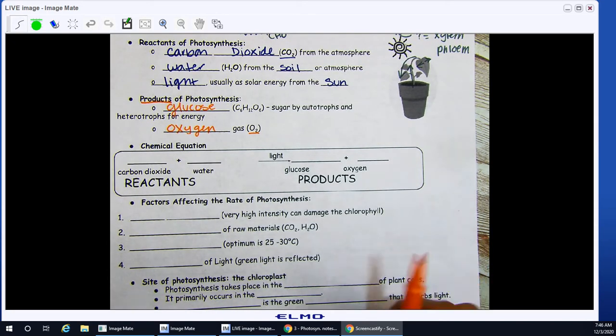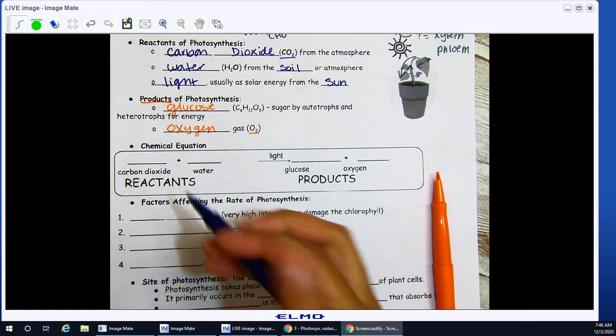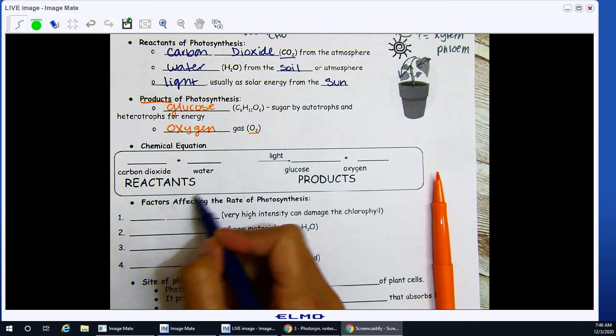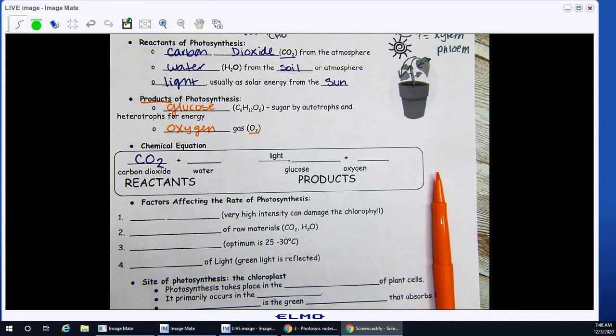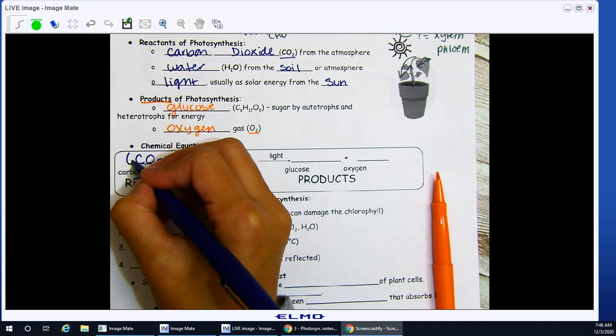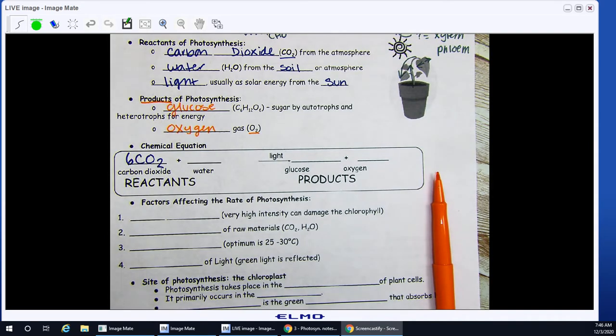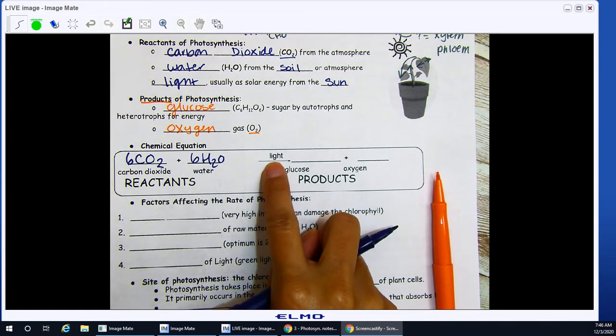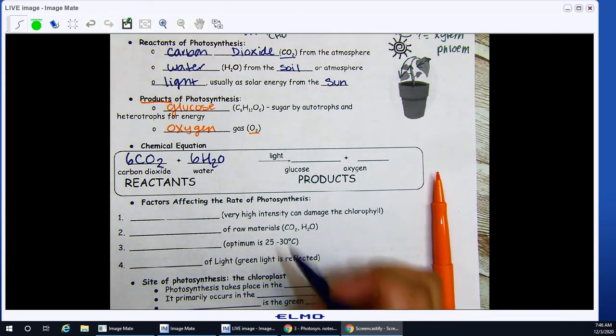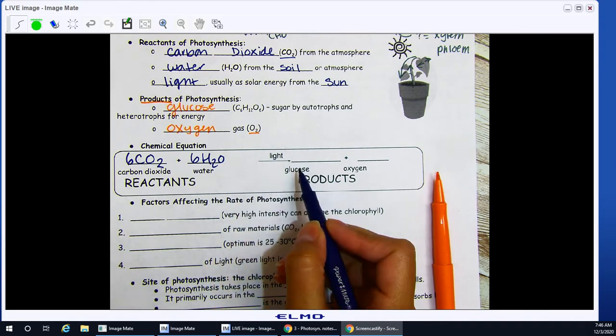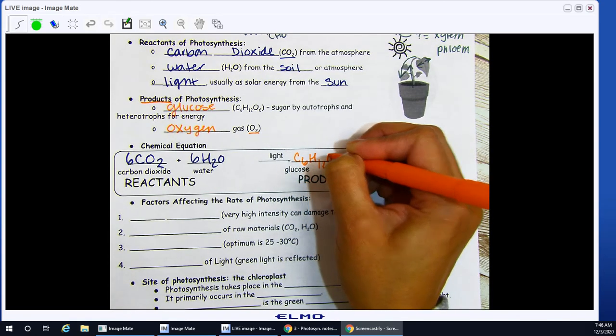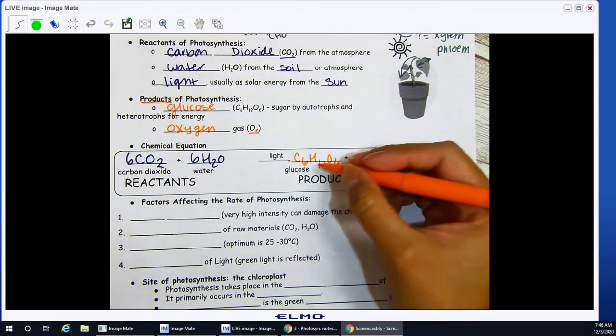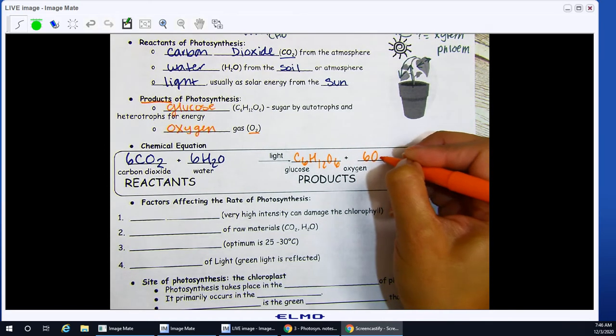Chemical equation. So this is what your chemical equation would look like. My reactants, what goes into my reaction is CO2, carbon dioxide. So how many do I need? I need six. Six CO2 plus six H2O. I need light energy. And out of it, my products, I am now going to get C6H12O6. That is your glucose and oxygen, 6O2.